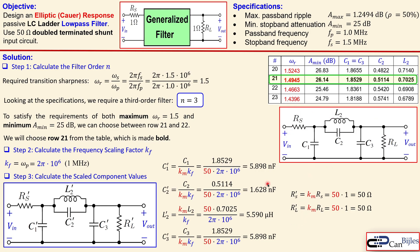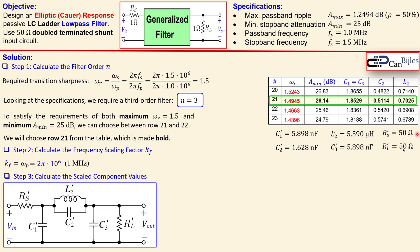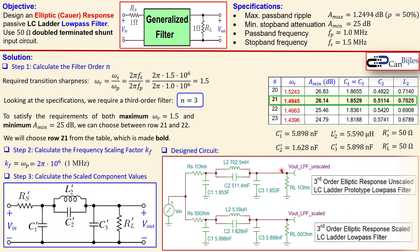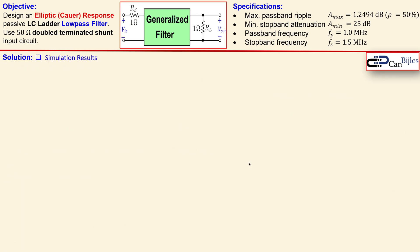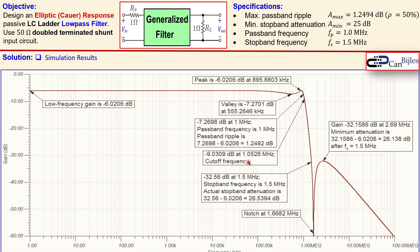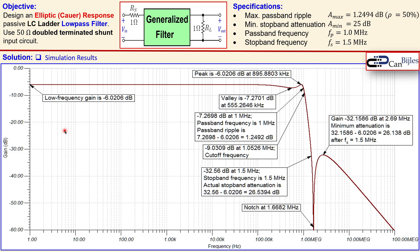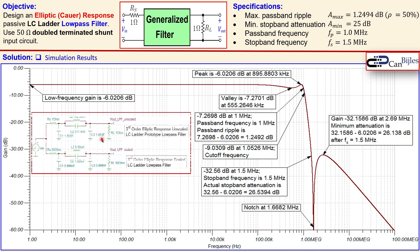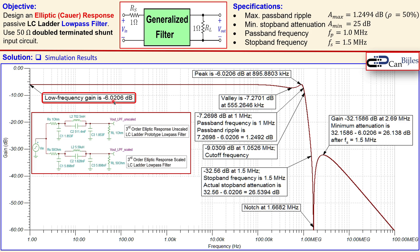All six components are now determined. Let's bring them together as a summary and bring up the design circuit in the simulator. The first circuit shown is the prototype low-pass filter for the elliptic response with coefficients C1, C2, L2, and C3 from the table, alongside the scaled practical values we just determined. Now we verify our circuit using the Bode plot showing magnitude. The low-frequency gain is approximately minus 6.02 dB because at DC this circuit has a gain of 0.5 — 50 ohm over 100 ohm total — and 20·log(0.5) gives approximately −6.02 dB.